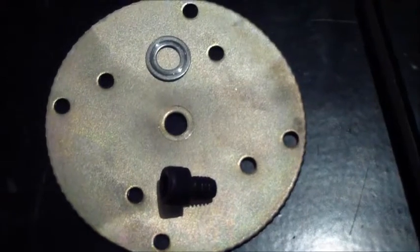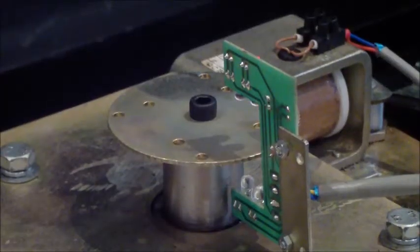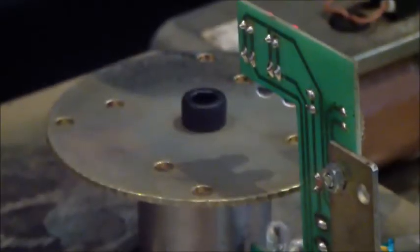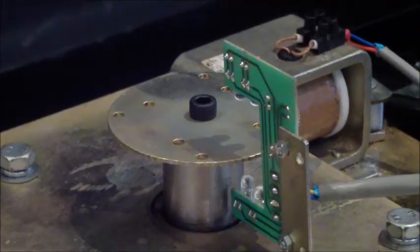Step 3: Optical sensor disk installation. Now install the optical sensor disk onto the center shaft, with the smooth face facing up and the rough face facing down.